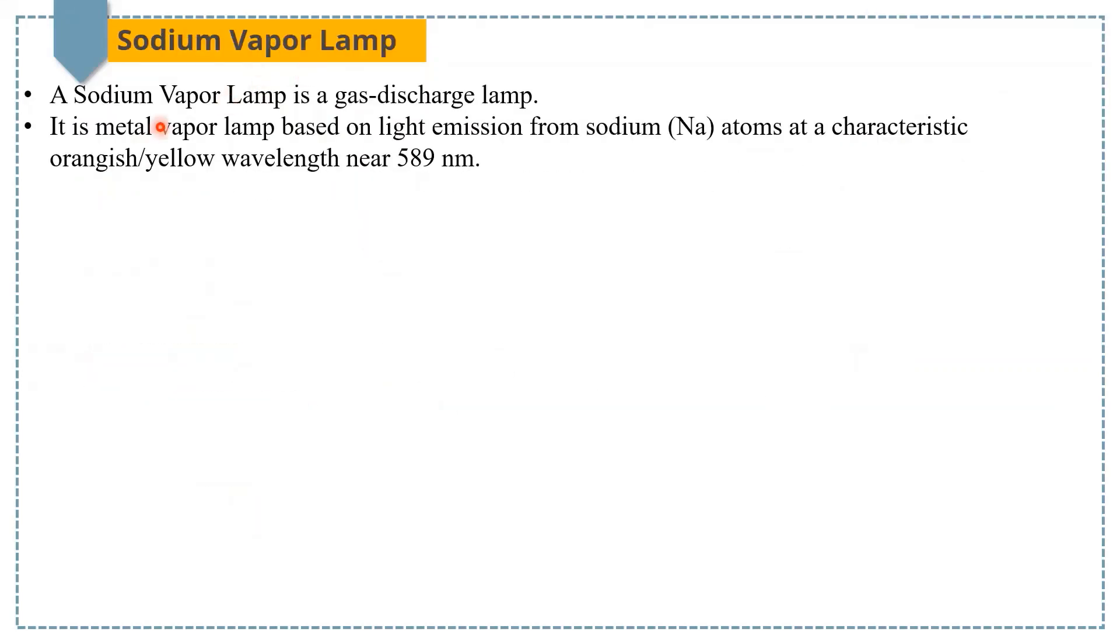Sodium vapor lamp. A sodium vapor lamp is a gas discharge lamp. It is metal vapor lamp based on light emission from sodium atoms at a characteristic orangish wavelength near 589 nanometer.